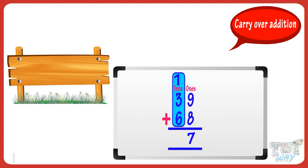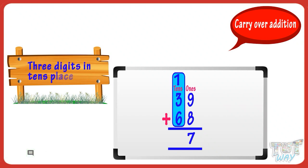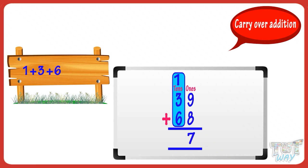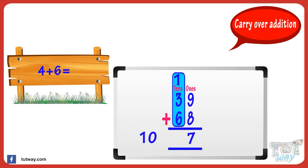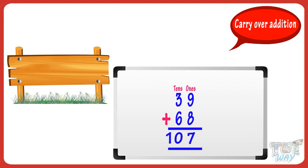Now add the three digits in the tens place: one, three, and six. One plus three equals four, and four plus six equals ten. Now write the two-digit sum like this. We got it! Thirty-nine plus sixty-eight equals one hundred and seven.